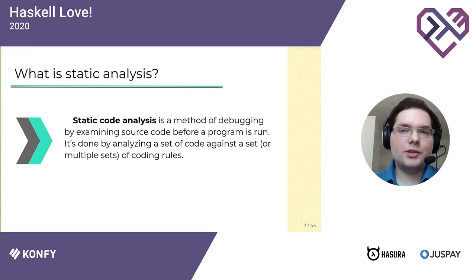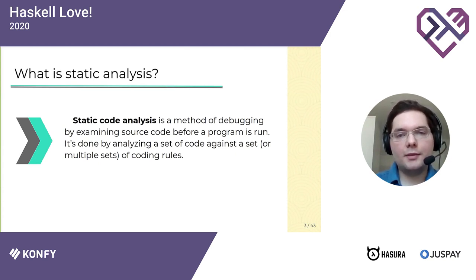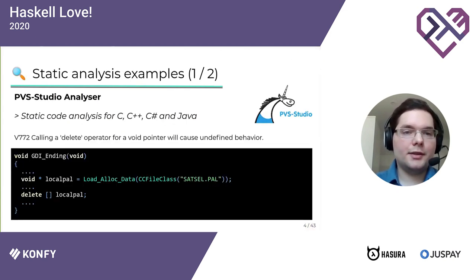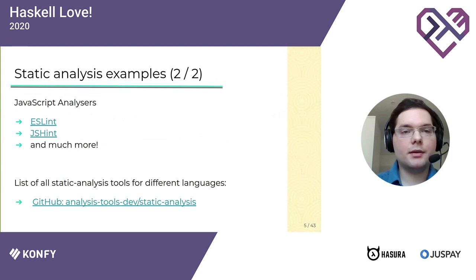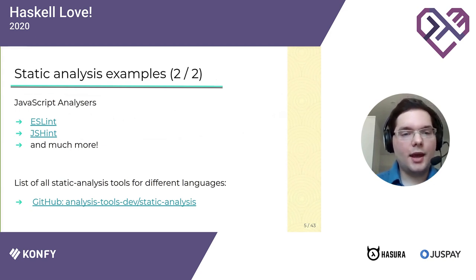Static code analysis is a generic term. Basically any tool that analyzes the code without actually running it can be considered as a static analyzer, but usually when people say static code analysis they mean a tool that finds vulnerabilities in the code and provides solutions to those problems. For example, PVS Studio Analyzer is a famous static code analysis tool for C, C++, C# and Java. Also languages such as JavaScript and Python benefit a lot from static analyzers as they help maintain good code quality. If you are curious about static analyzers for your favorite languages, you can check out the static analysis repository on GitHub — it contains a list of static analyzers for different languages.